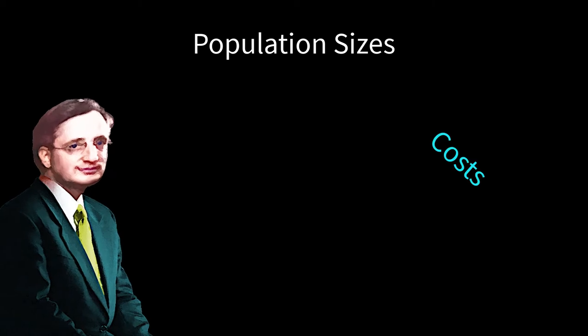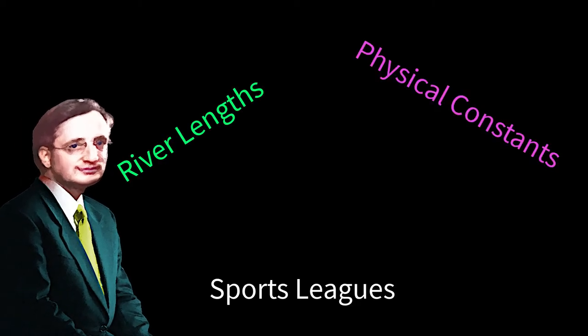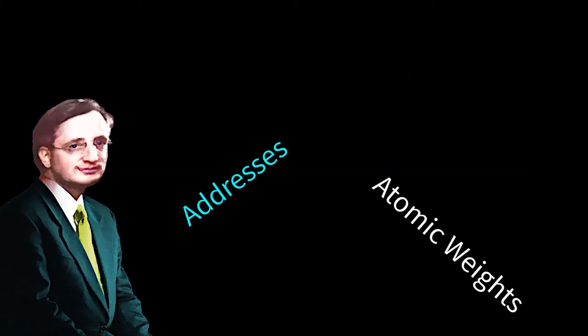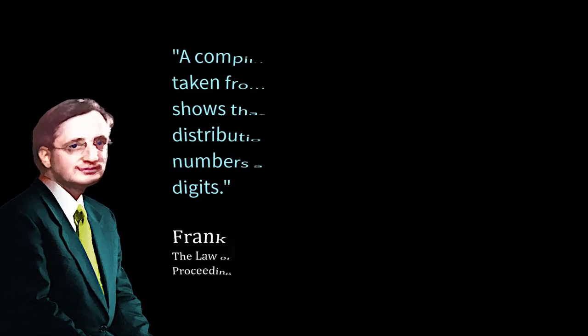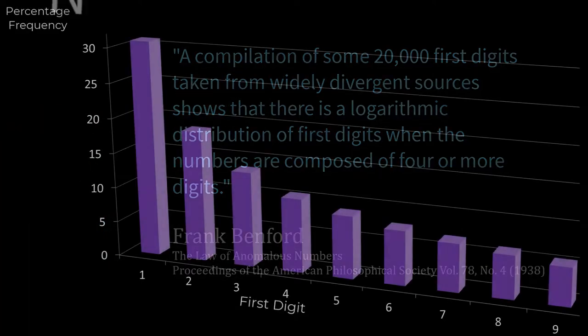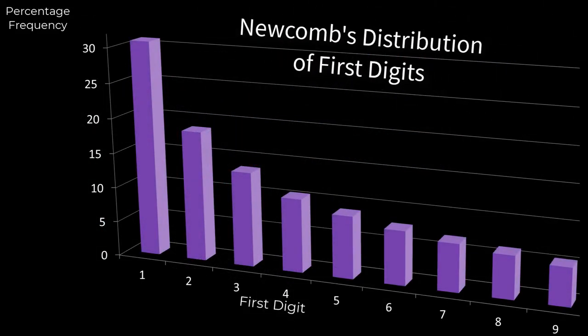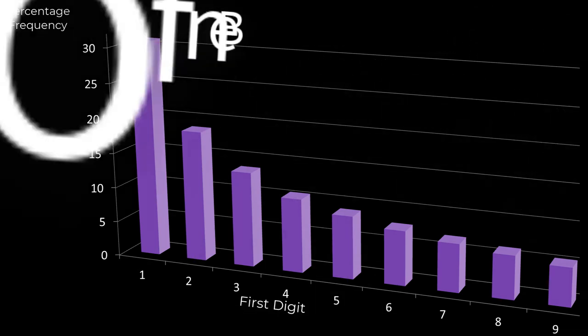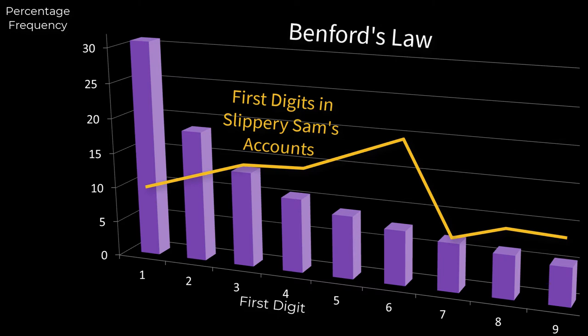In 1938, Frank Benford, who was two years old when Newcombe published his findings, found the phenomenon Newcombe had discovered applied in a large variety of situations. About a third of numbers in many real life situations, including scientific data and financial accounts, should begin with 1. Otherwise, fraud may be suspected.